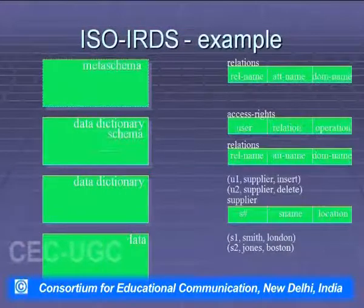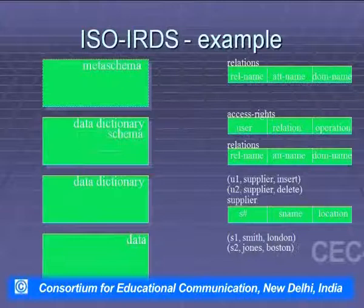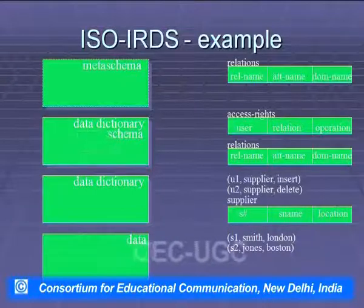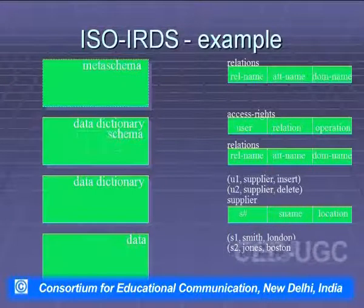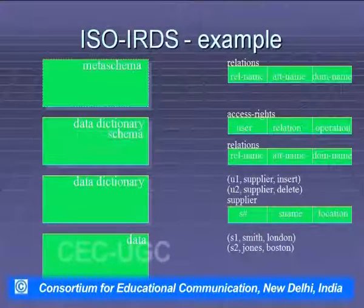In the ISO IRDS example, you can see relations with attributes like real name, alternate name, ownership, access rights, user-relation, and operations defined, with an example involving supplier and related entities — a good illustration of ISO IRDS.